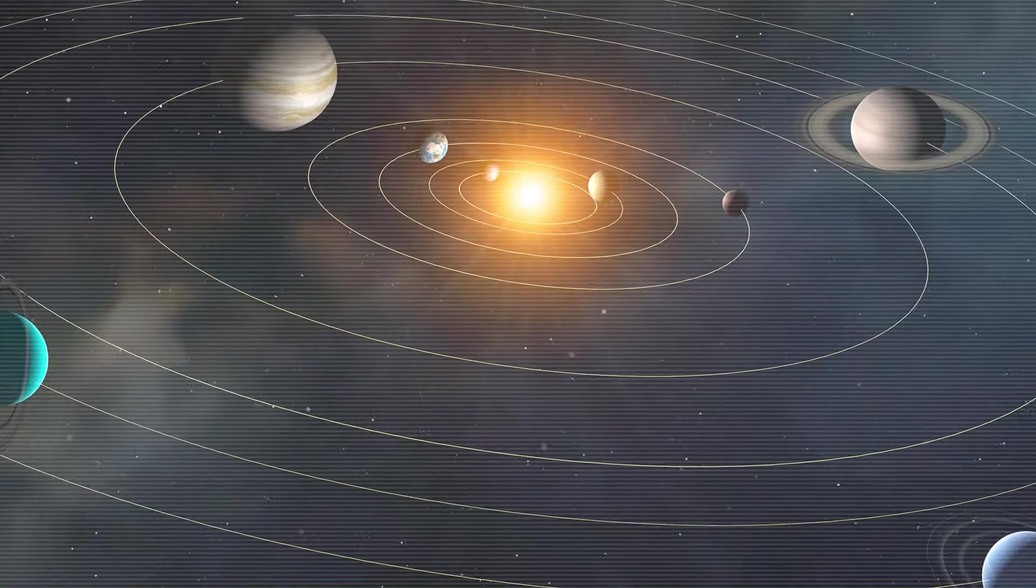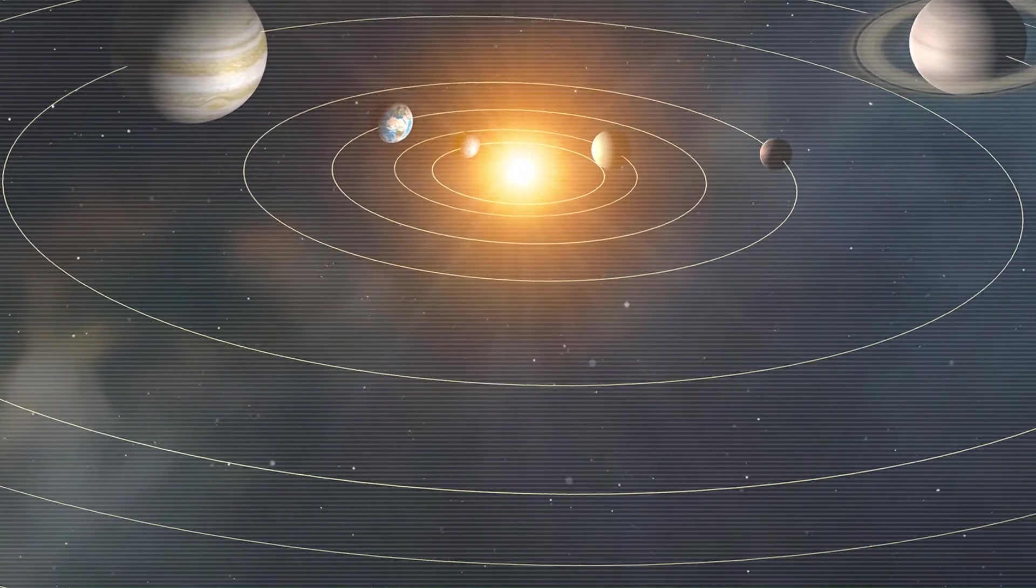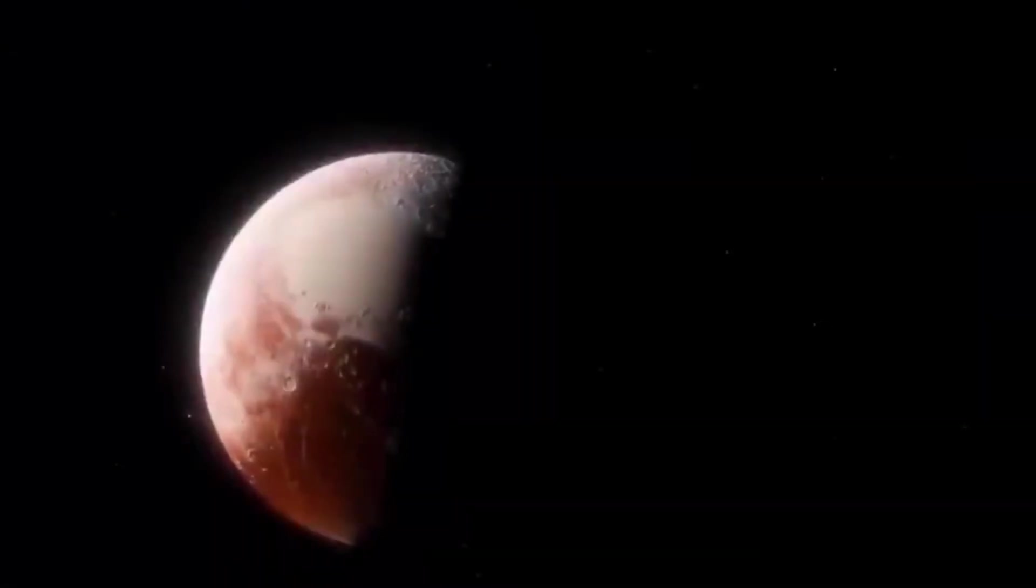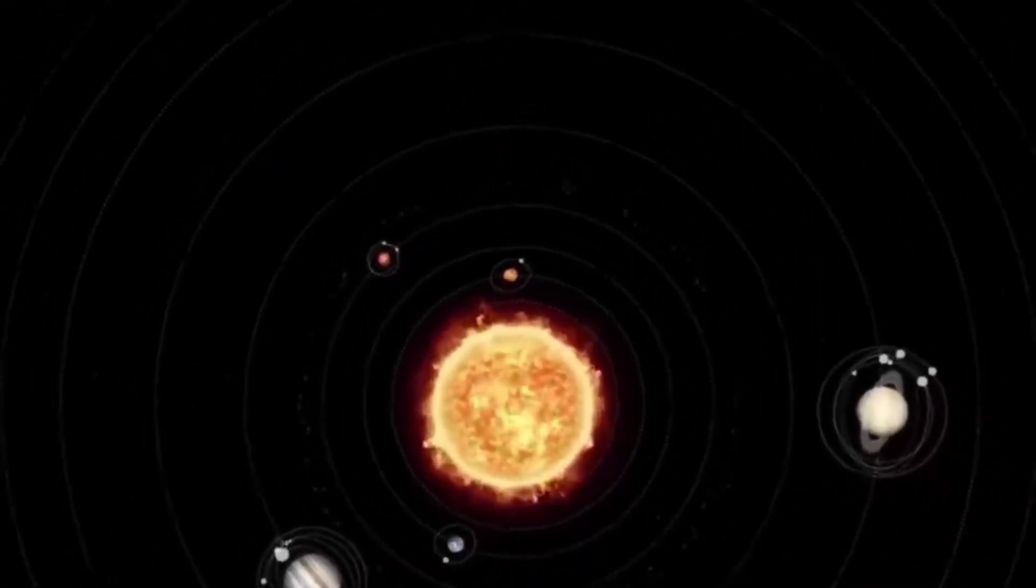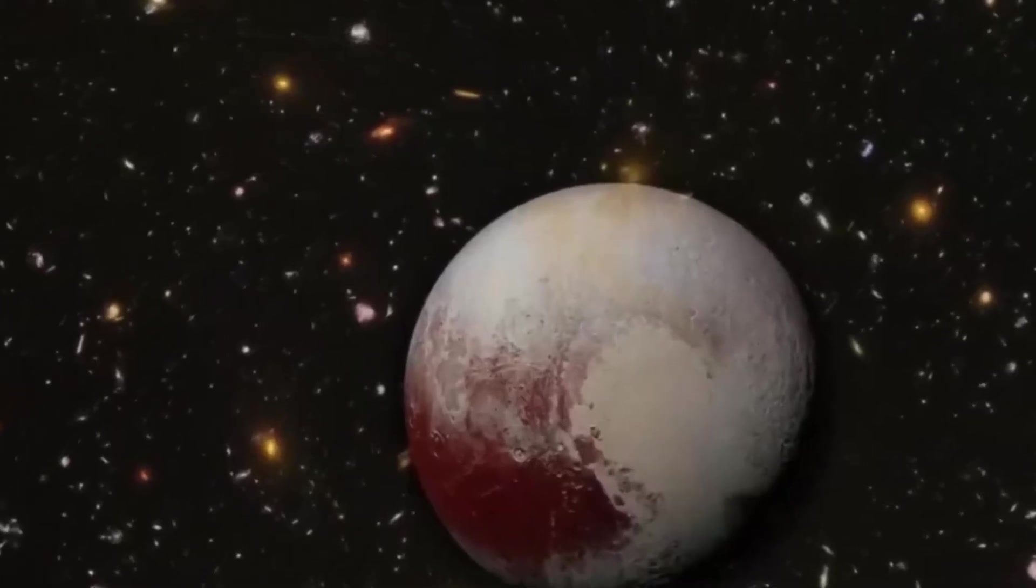Pluto is the odd one out in the solar system when it comes to its orbit. It is not a perfect circle like the others, and its trajectory is also rather steep. At certain times, Pluto overcomes Neptune and approaches the Sun, which is a noteworthy fact.